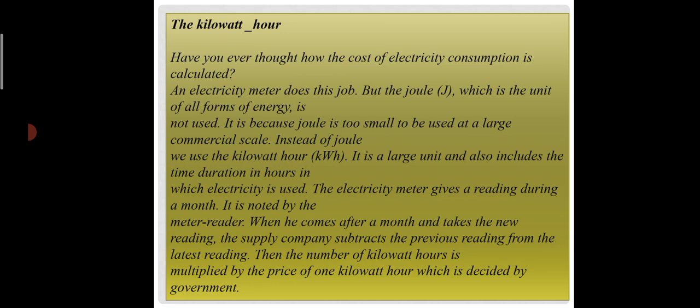The number of kilowatt-hours is then multiplied by the price of one kilowatt-hour, which is decided by the government. So the kilowatt-hour is the larger unit, while the joule is a smaller unit used for all forms of energy and is not used at large commercial scales. Instead of joule, we use the kilowatt-hour, and the electricity meter gives a reading during a month, which is noted by the meter reader.